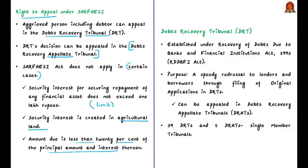The Recovery of Debts Due to Banks and Financial Institutions Act of 1993, that is the RDDBFI Act, provides speedy redressal to lenders and borrowers through filing of original applications in the Debt Recovery Tribunals. DRT decisions can be appealed in the Debt Recovery Appellate Tribunals or DRATs. There are 39 Debt Recovery Tribunals and five Debt Recovery Appellate Tribunals, which are single-member tribunals. The five DRATs are located in Allahabad, Chennai, Delhi, Kolkata, and Mumbai.